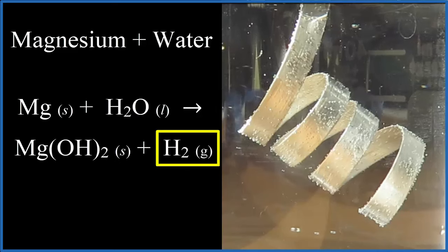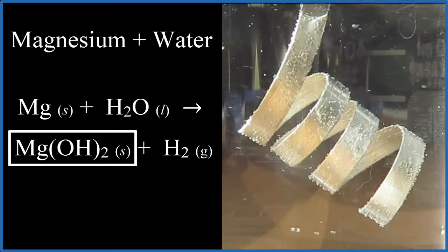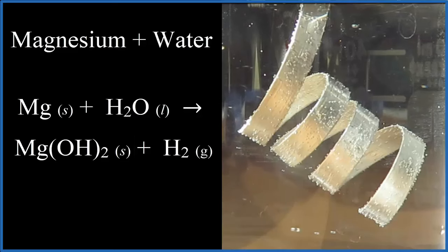So we have our gas. We're also forming magnesium hydroxide. Magnesium hydroxide doesn't dissolve very well in water—it's insoluble. So it's forming a layer of magnesium hydroxide on the metal, slowing the reaction down.